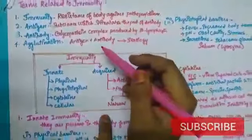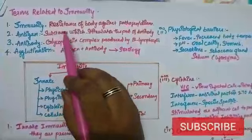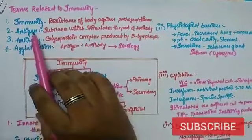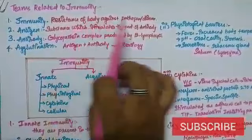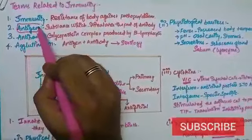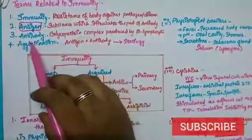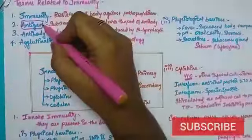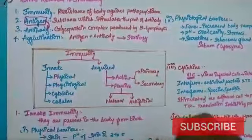Terms related to immunity: Immunity is the resistance of body against pathogen or disease. Antigen is a substance which stimulates the production of antibody. This antigen is a protein complex present on the surface of the pathogen. Antibody is a glycoprotein complex produced by B lymphocytes, actually produced in response to the antigen present in blood.